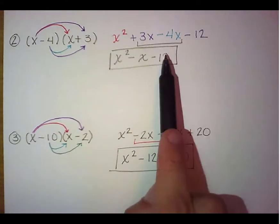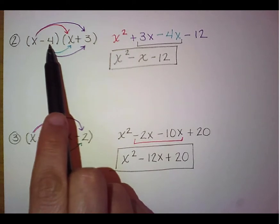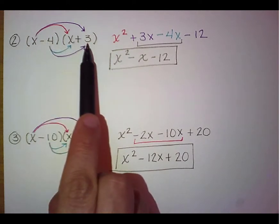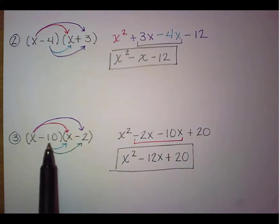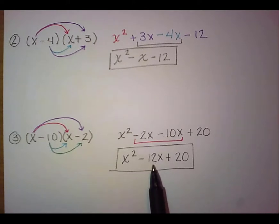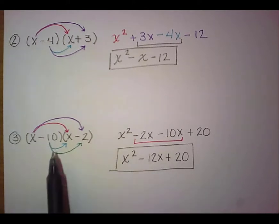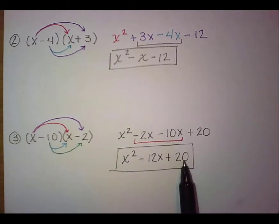Also I hope you notice that the negative 12 which we got from doing our multiplication is the same as negative 4 times positive 3 gave us that negative 12. And the same thing can be said down here. If you do negative 10 plus negative 2 you get negative 12, and if you do negative 10 times negative 2 you get a positive 20.